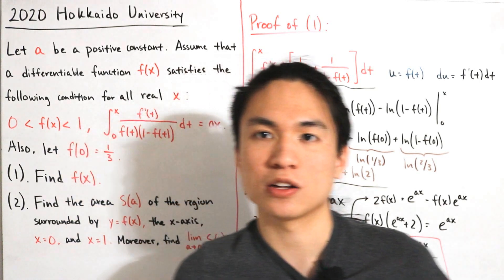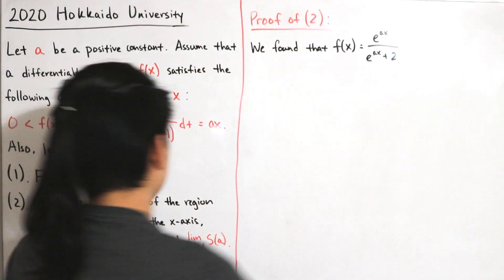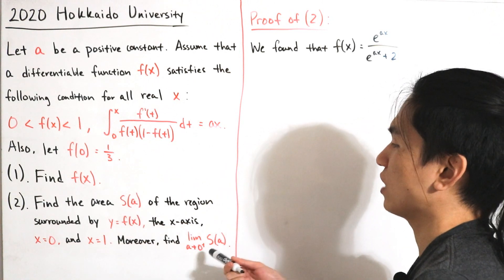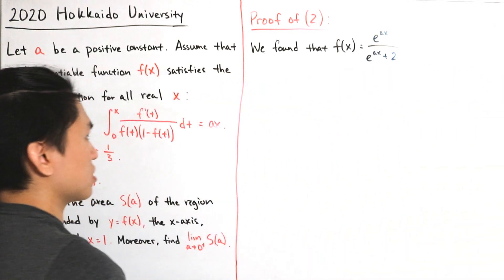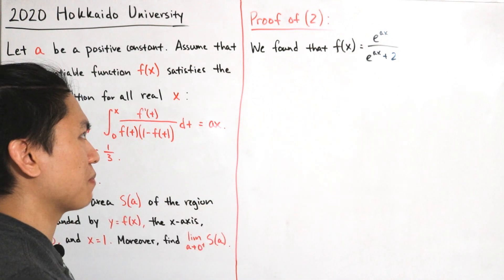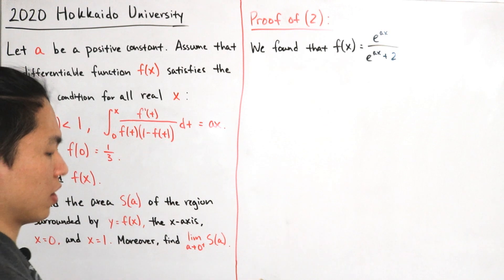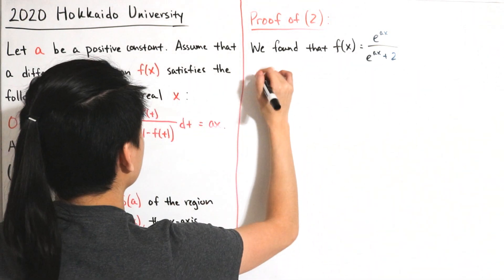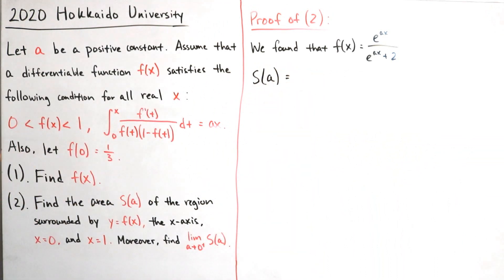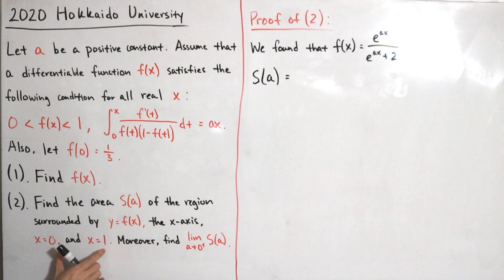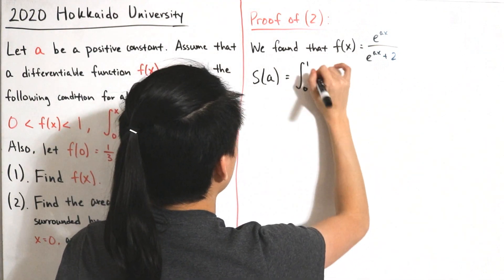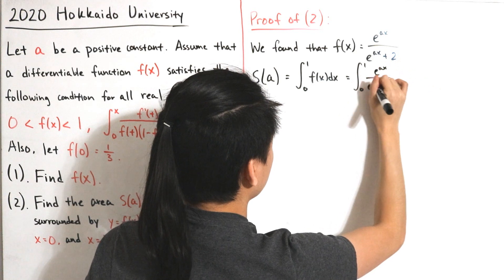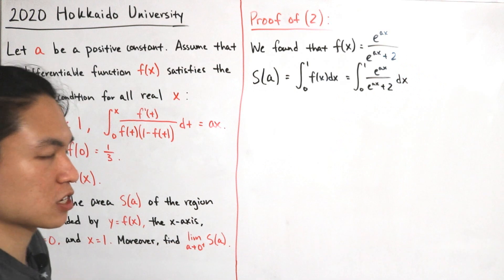Now let's move on to Part 2: finding the area S(a) of the region surrounded by y = f(x), the x-axis, x = 0, and x = 1, and later the limit as a → 0⁺ of S(a). With f(x) = e^(ax) / (e^(ax) + 2), the area is S(a) = the integral from 0 to 1 of e^(ax) / (e^(ax) + 2) dx.